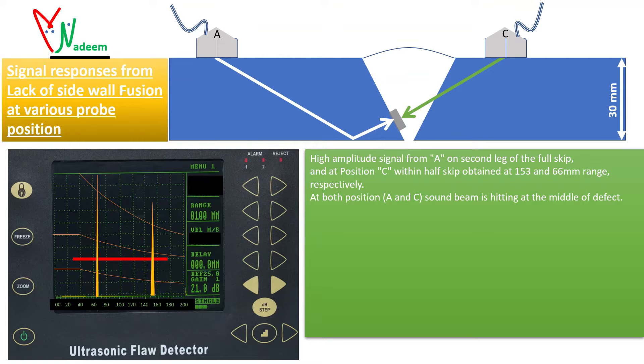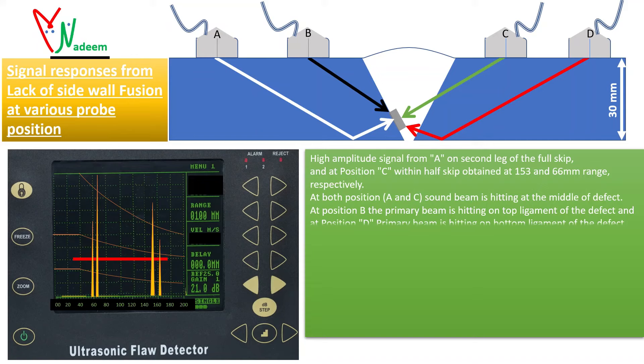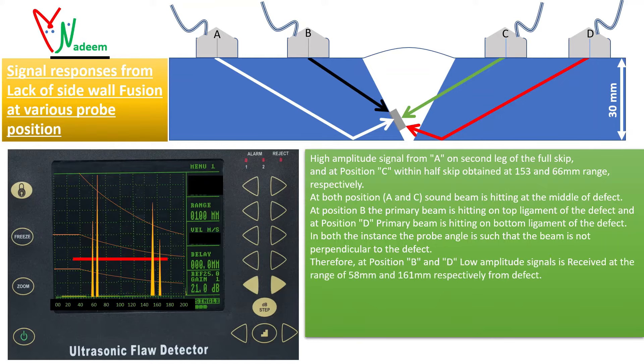At position B the primary beam is hitting on the top ligament of the defect and at position D the primary beam is hitting on the bottom ligament of the defect. In both instances the probe angle is such that the beam is not perpendicular to the defect. Therefore at positions B and D lower amplitude signal is received at the range of 58 millimeters and 161 millimeters respectively from the defect.